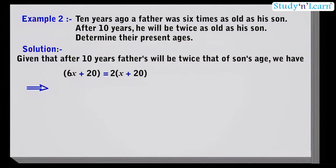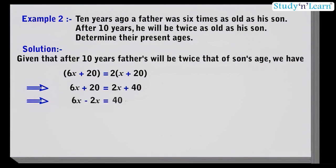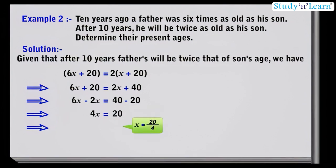This implies 6x plus 20 is equal to 2x plus 40. Getting the variables on one side and constants on the other: 6x minus 2x is equal to 40 minus 20. This implies 4x is equal to 20. This implies x is equal to 20 by 4, that means x is equal to 5.